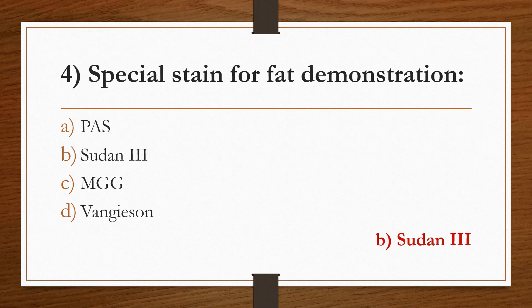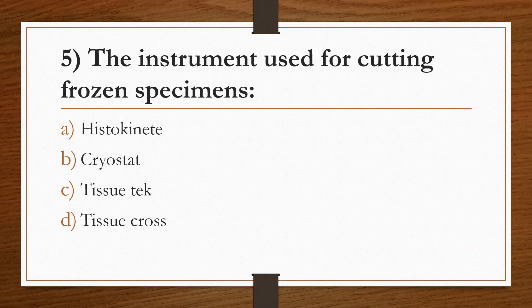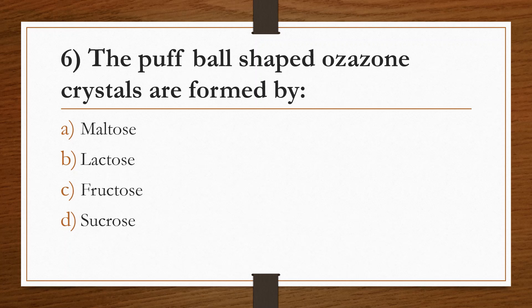Heparin is related to Masson's trichrome stain — that is Masson's Giemsa stain — used for staining slides obtained from fine needle aspiration. Fifth question: the instrument used for cutting frozen specimen. Option A: Histokinette. Option B: Cryostat. Option C: Tissue-Tek. Option D: Tissue processor. Answer is Option B, Cryostat. Histokinette is an automated tissue processor.